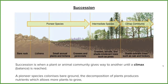The first process I want to discuss is succession. Succession is when plants or animals give way to another species, and they continue doing this until they reach a balance between the living biotic and the non-living abiotic — and we call this balance a climax.